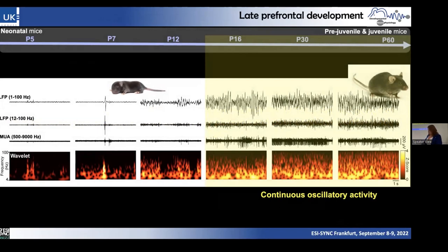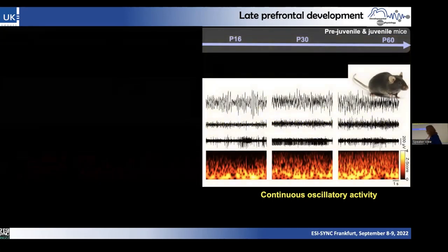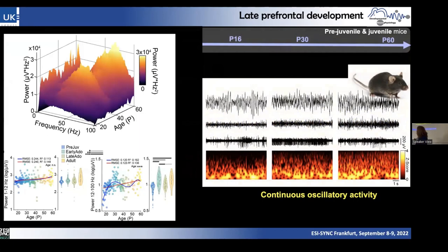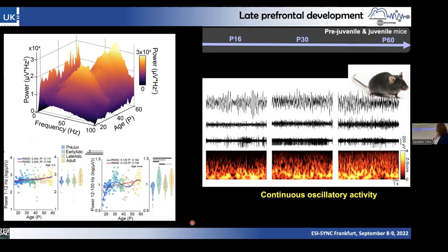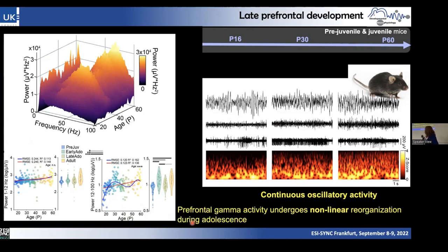What about the adolescent and juvenile period, when so many cognitive abilities emerge? We recorded the same mice every day and found that while the theta rhythm shows a continuous increase, the high-frequency beta-gamma activity shows two peaks — a first peak, then a decrease, and then another peak around P40. This is a non-linear reorganization of prefrontal oscillatory activity.